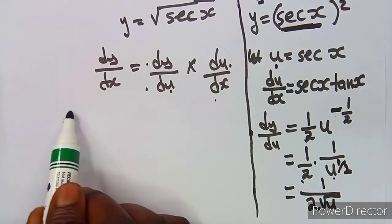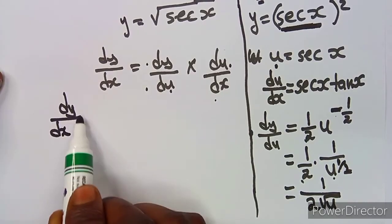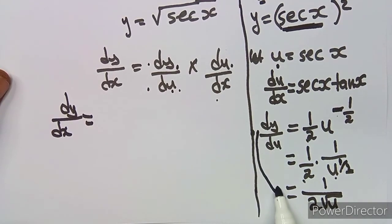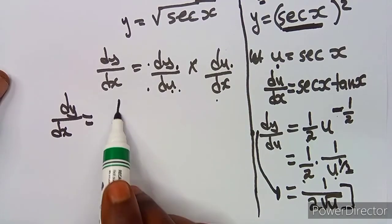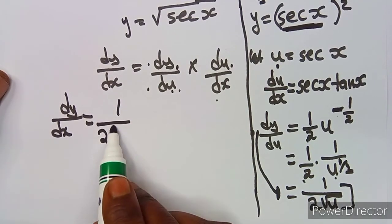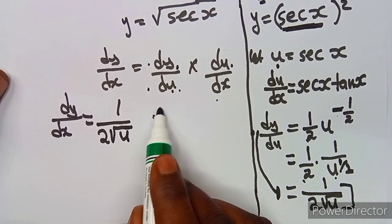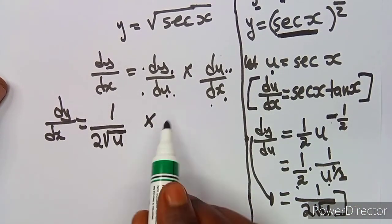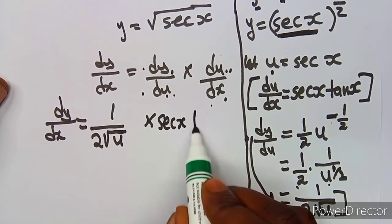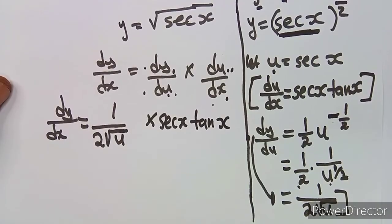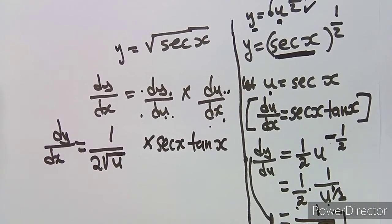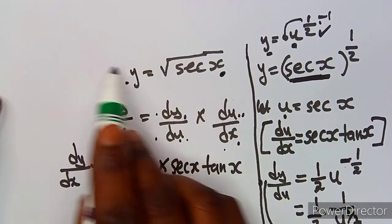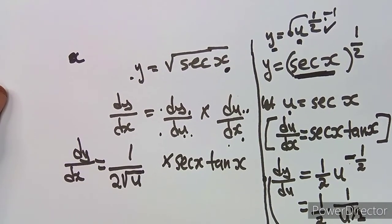Now if we cross-check, we are having dy/dx which is equivalent to dy/du — the one we calculated, which gave us 1 over 2√u — multiplied by du/dx. We found du/dx from this part, which is sec x tan x. But the final answer for dy/dx is supposed to be entirely in terms of x, and here we are still having u, so we need to back-substitute.